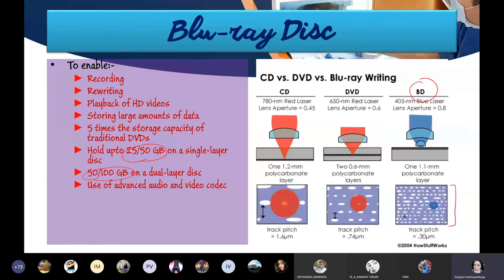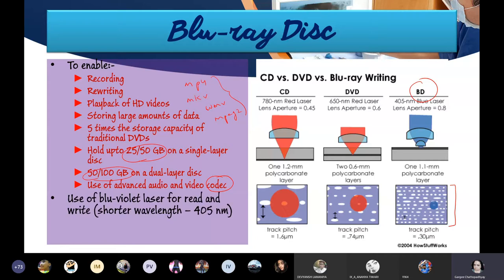Blu-ray uses advanced audio and video codecs - a codec is an encoding technique for playing different audio and video formats like MKV, MP4, WMV, MPEG, and MPEG-2. These advanced codecs can support multiple formats. A blue-violet laser is used for read and write operations, which has a shorter wavelength. These days you can get Blu-ray discs up to 128 GB capacity.